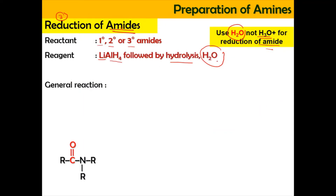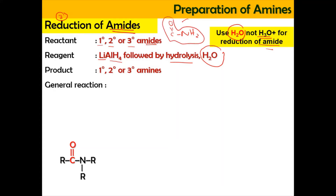This is because amide has an NH2 group, which acts as a base. When you have acid present, a neutralization reaction would occur instead of reduction — which is not what we want. Therefore, we need to use water as a neutral solvent for the reduction of amides.